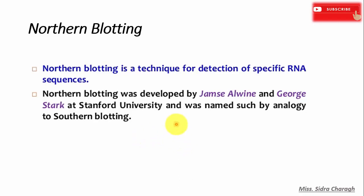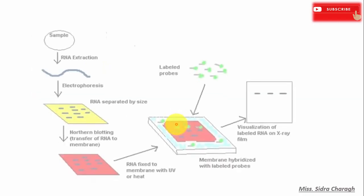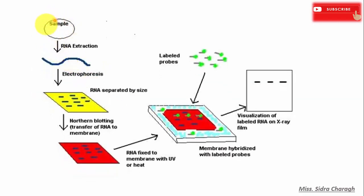Northern Blotting is used to determine the identity, size, and abundance of specific RNA sequences. Northern Blotting protocols begin with RNA isolation and separation techniques that depend on RNA size.